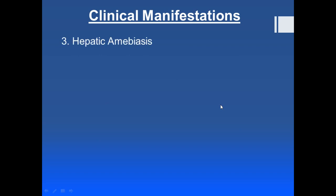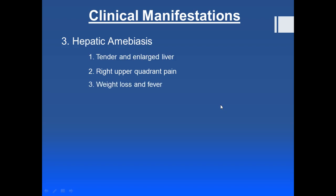For the clinical manifestations of extra-intestinal amoebiasis, mainly hepatic amoebiasis occurs. When abscess is formed in the liver — reaching by the portal vein, causing necrosis and abscess formation — there will be tender and enlarged liver, pain in the right upper quadrant, weight loss, and fever. These are the clinical manifestations of hepatic amoebiasis.